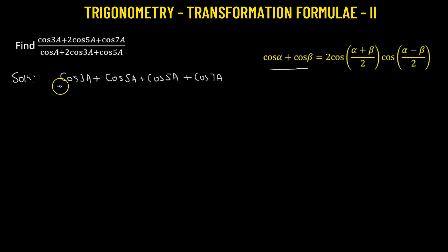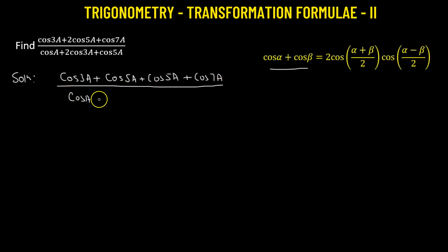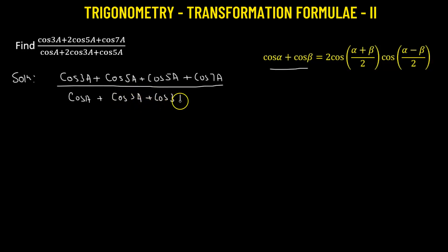Let's do the same thing to the denominator as well. We have cosine of a, and we're going to split the middle term, so we get cosine of 3a plus cosine of 3a plus cosine of angle 5a.